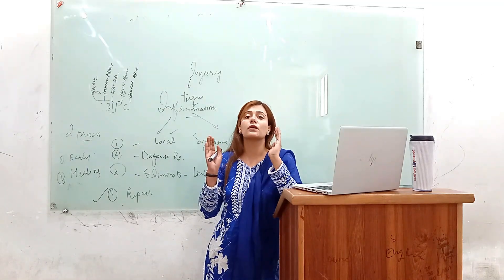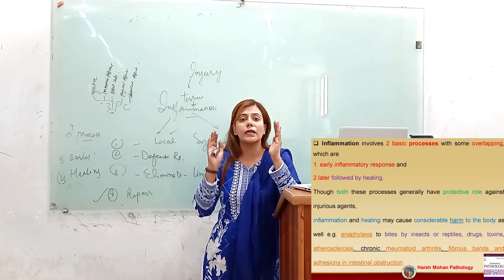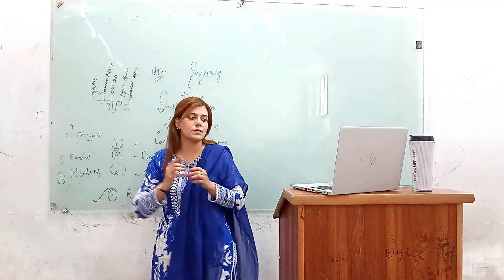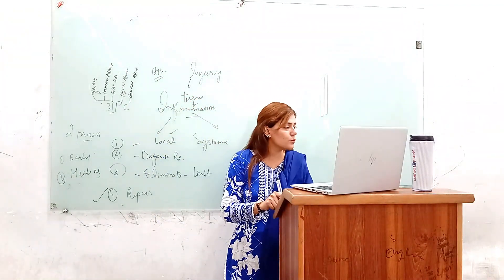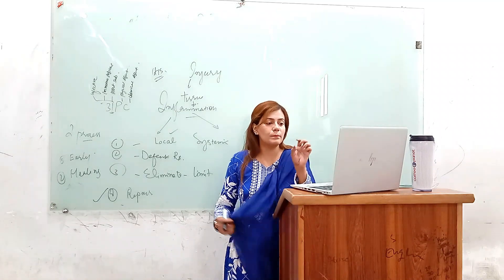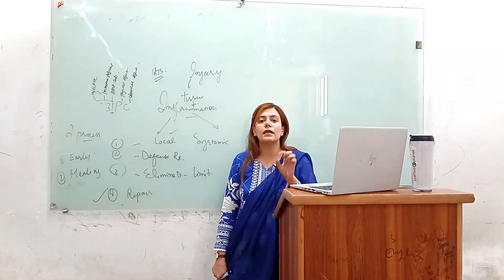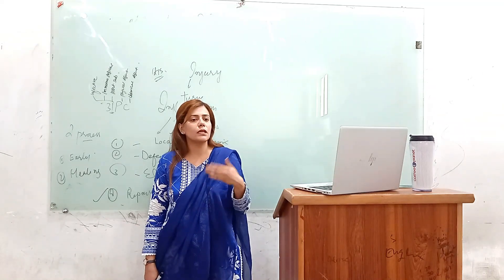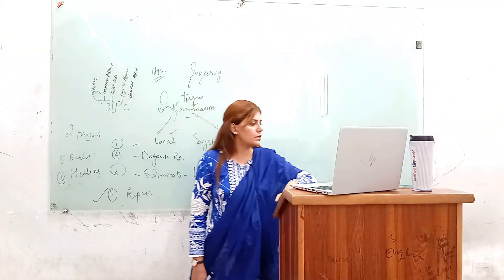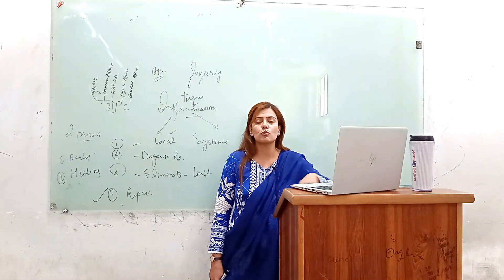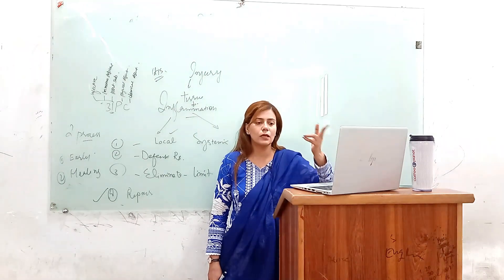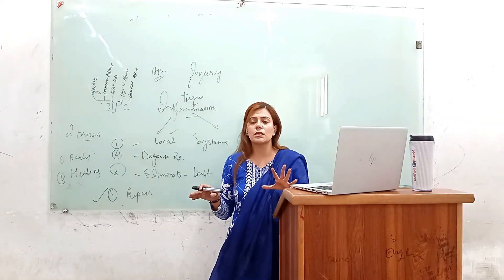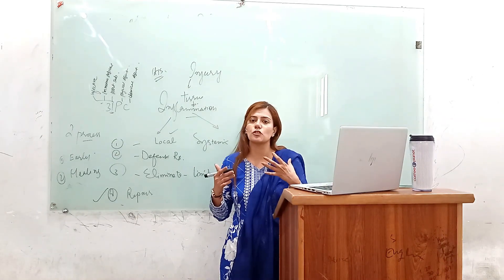Chronic rheumatoid arthritis, which is named with the suffix '-itis', is one example. Chronic arthritis involves persistent inflammation. Also, fibrous bands and adhesions can form following intestinal surgery or injury, creating painful scar tissue in that region. These are reactions that can be harmful.